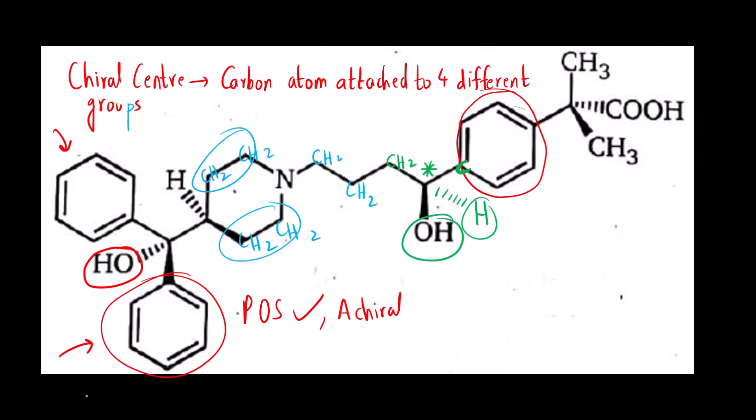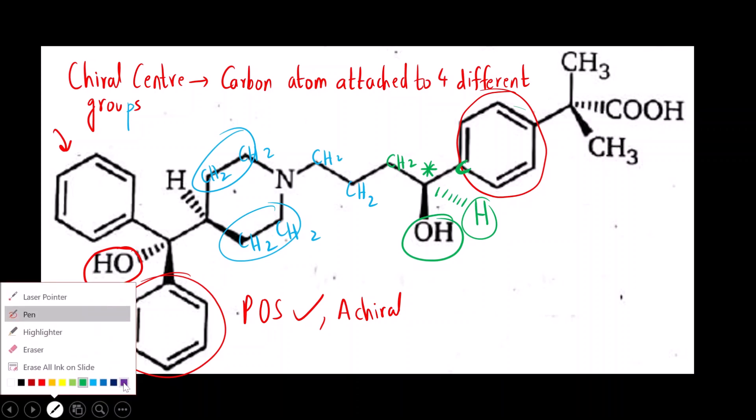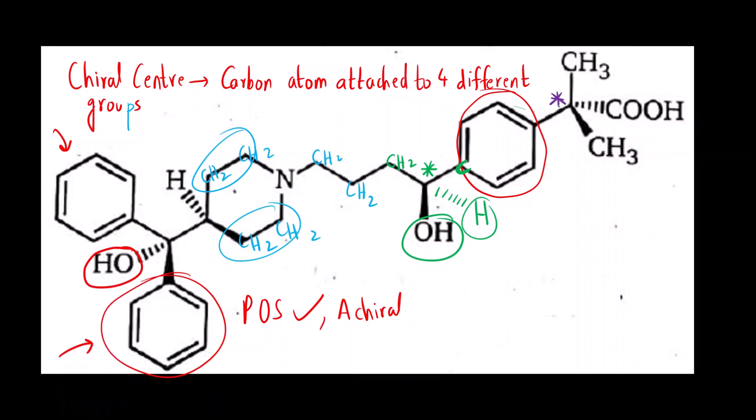Now we had marked this last carbon also chiral. So is this chiral? Let us check. COOH is different. Benzene ring, this entire part is different. But again, you can see here two methyl groups are same. So this is also not chiral.